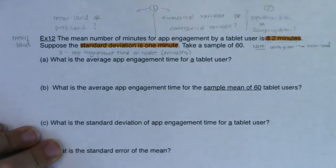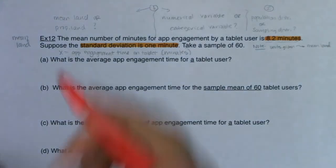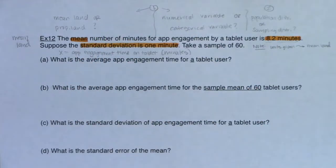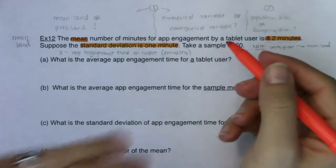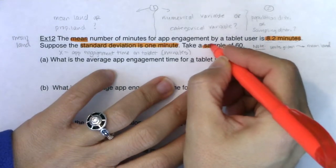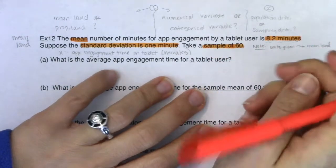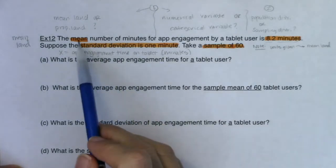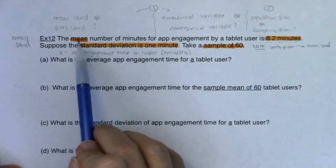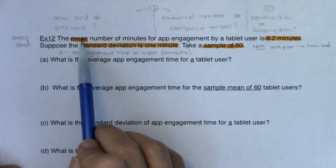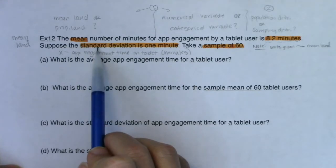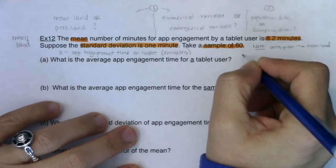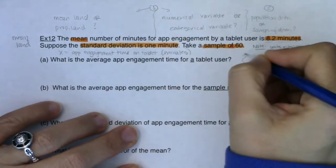The other giveaway that I was in mean land was the word 'mean' — look for the fun, obvious clues. The other thing I noticed is it said 'take a sample of 60,' so there's a possibility I'll be on a sampling distribution. I say possibility because this first sentence was about the population distribution — the average is 8.2 minutes and the standard deviation is 1 — and then take a sample of 60.